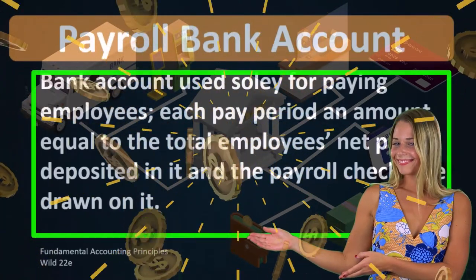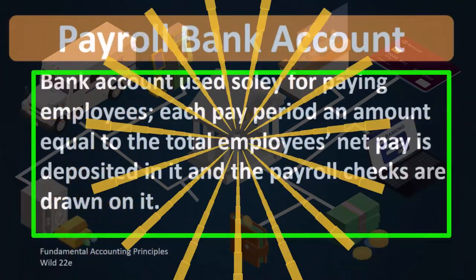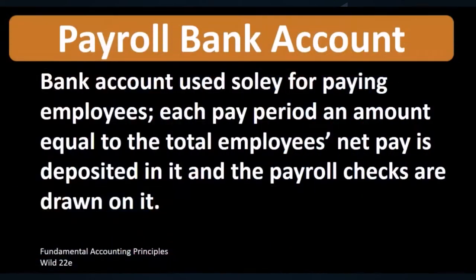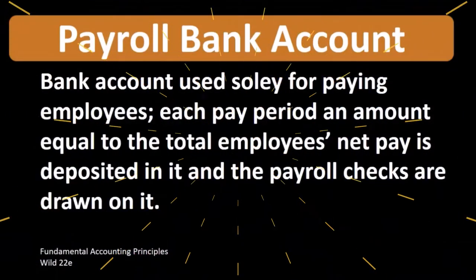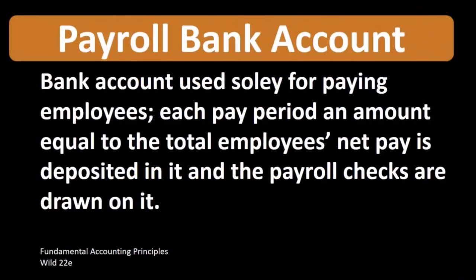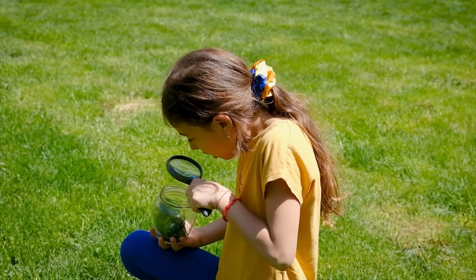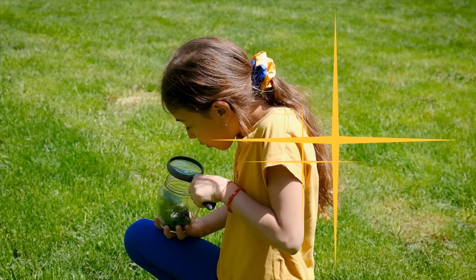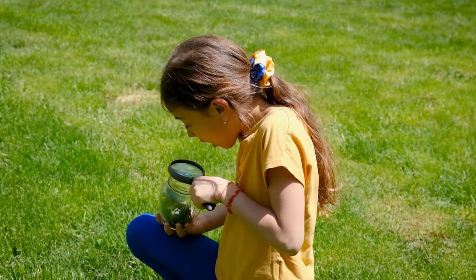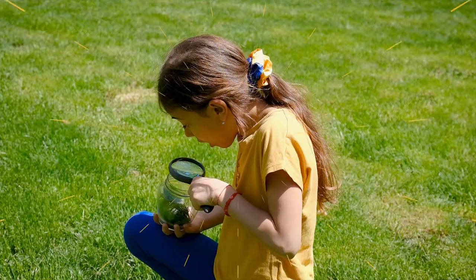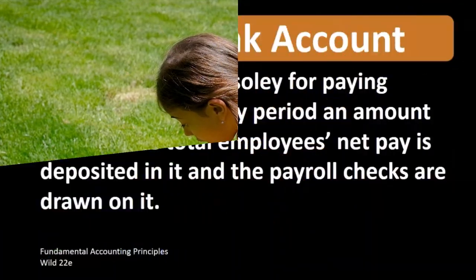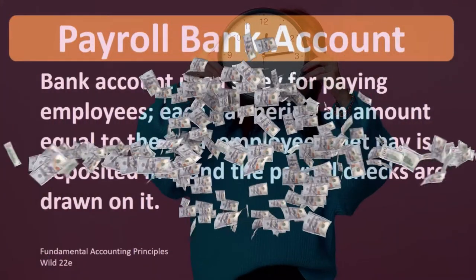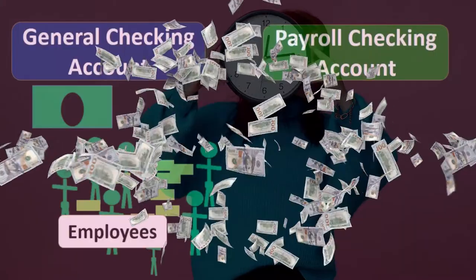The payroll bank account is going to be another checking account — a checking account separate from the general checking account. If we look at the trial balance, we will see the checking account and then a new account for the payroll bank account. Most of the time, the payroll bank account will have a zero balance in it, except for that point in time when we're processing the payroll, which would look something like this.